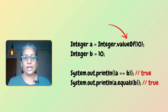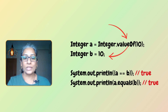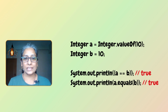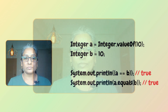Here we created two integer objects — one using the valueOf method provided by the Integer class, and the other by directly assigning a value of 10. We then compare the two integer objects using both the equal-to operator and the equals method. In this case, both comparisons output true. All good, right?